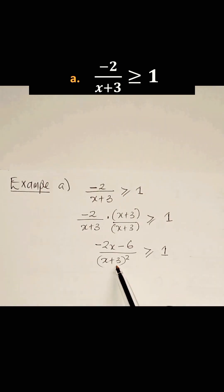We cross multiply (x+3)² by 1. Then we have -2x - 6 is greater or equal to (x+3)².